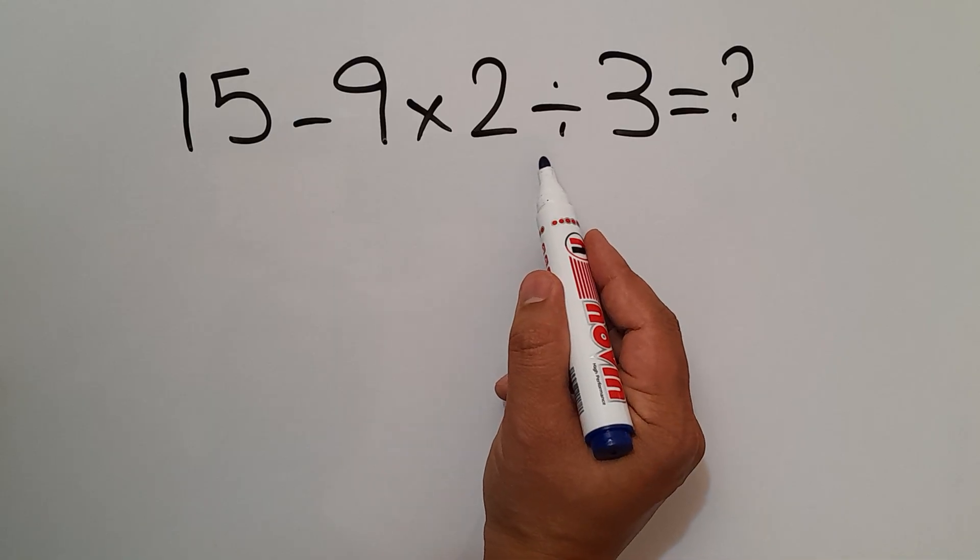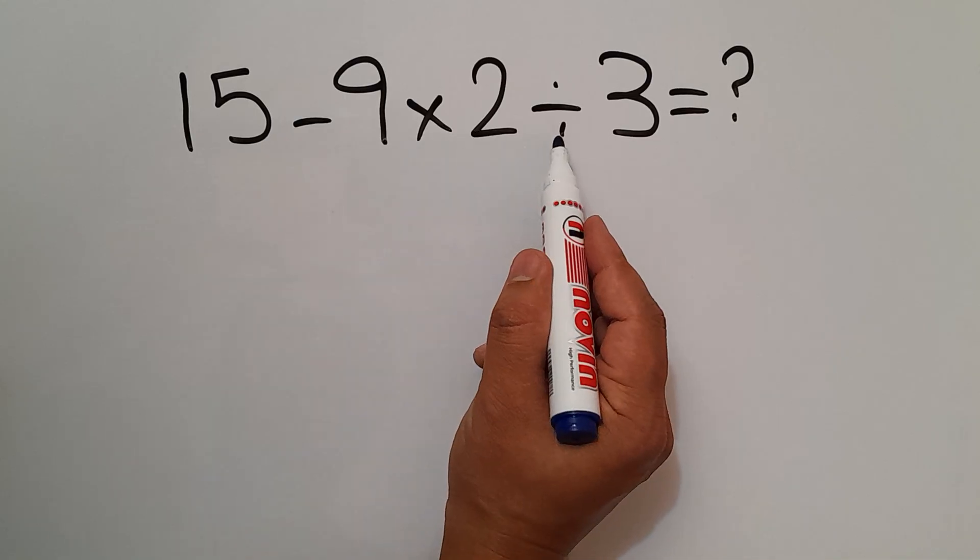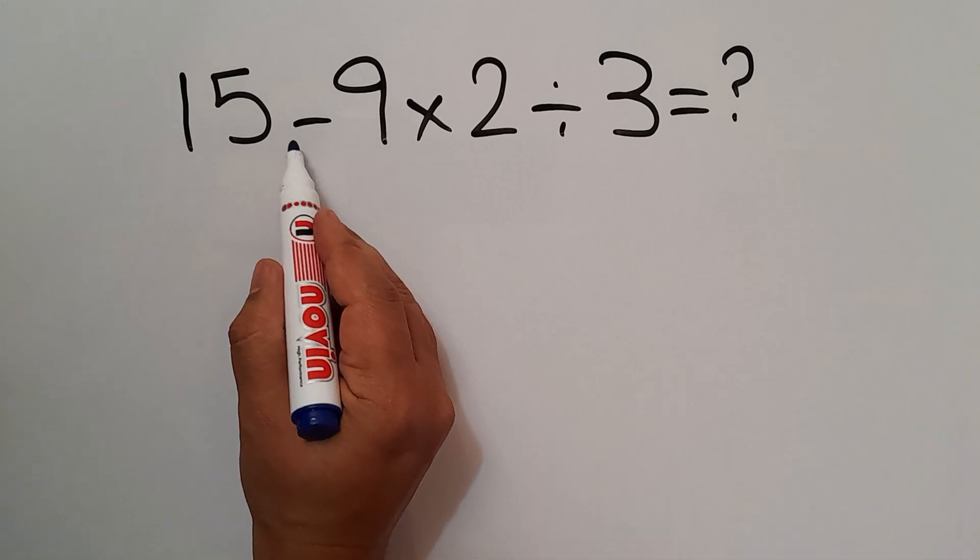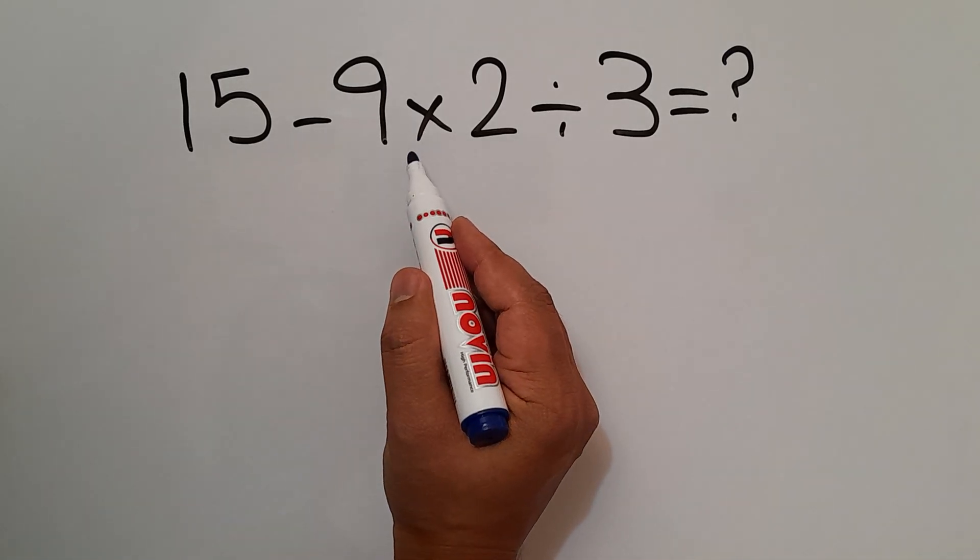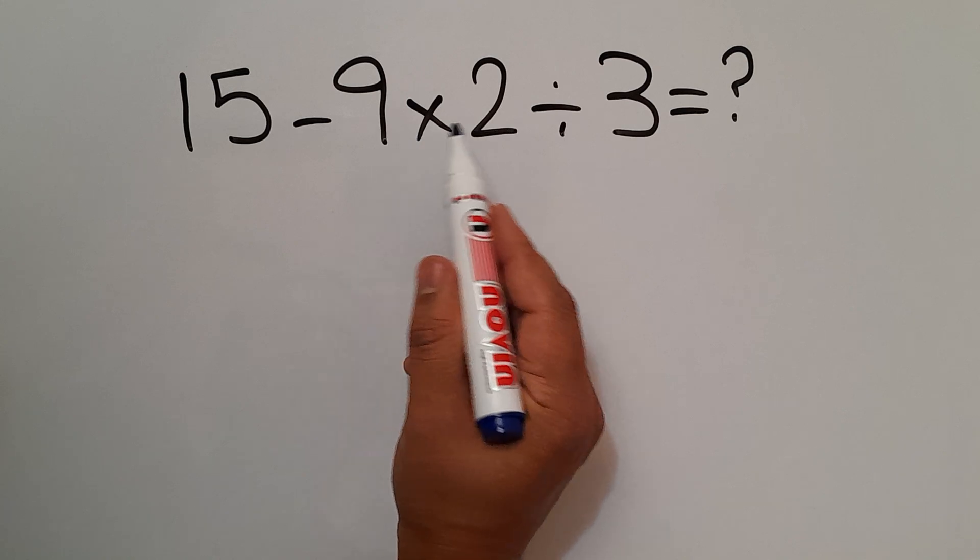According to the order of operations, multiplication and division have higher priority than subtraction. And also, multiplication and division have equal priority, and we have to work from left to right.